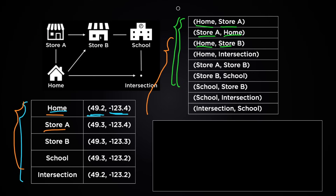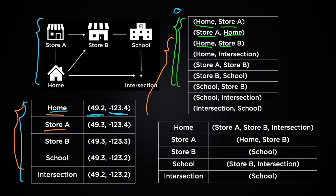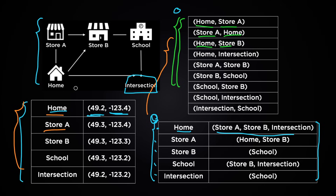Another option is to list each of these places, and for each place just list all the places you can go from there. With that method, your data might look like this instead — table-like information where on the left-hand side we have all the places listed: home, store A, store B, school, and intersection. On the right-hand side, for each place we have all the places you can go from there. From home you can go to store A, store B, and intersection.